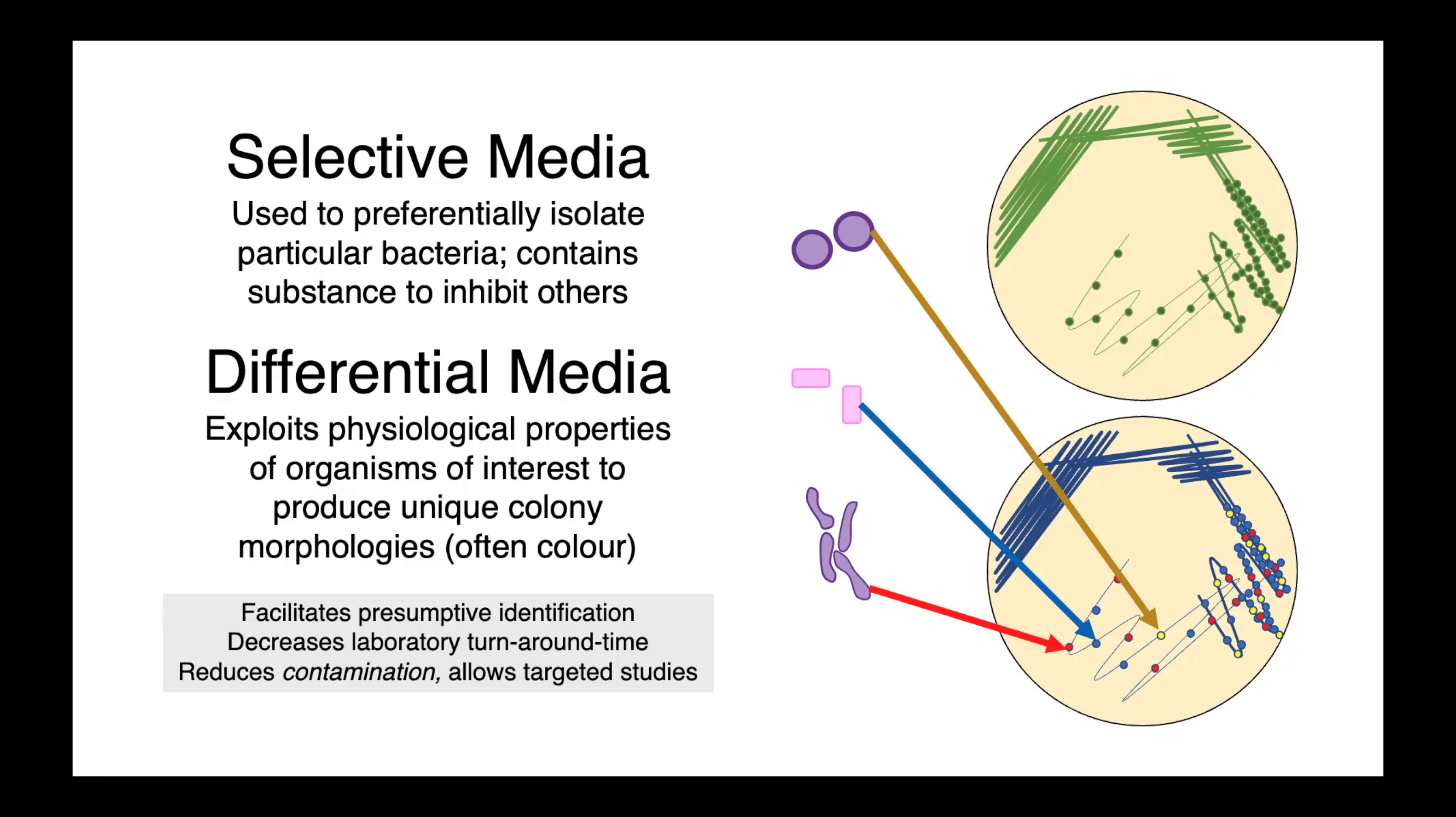Using selective media, we can rapidly determine which organisms we aren't dealing with. For instance, some media is used to select for gram positive bacteria, and so we can be fairly certain that we aren't dealing with a gram negative.